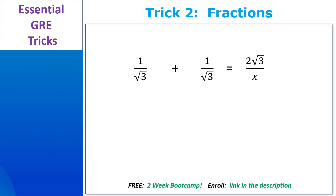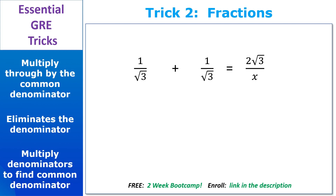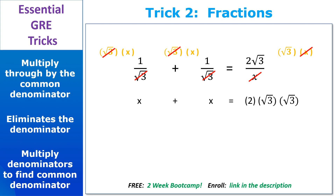One of the most powerful tools you have when dealing with hard fractions is to multiply the common denominator through the entire equation, because that eliminates the denominators altogether. The sooner you get rid of denominators, the sooner your life gets easier. The easiest way to find a common denominator is to simply multiply the denominators together. In this case, the common denominator is root 3 times x. So we multiply that through the entire equation, then cross stuff off that's the same on the top and the bottom. The root 3s cross off on the first term and the second term. The x's cross off on the other side of the equation. And just like that, we have a very simple equation with not a denominator in sight.